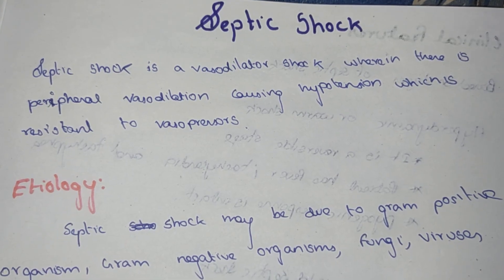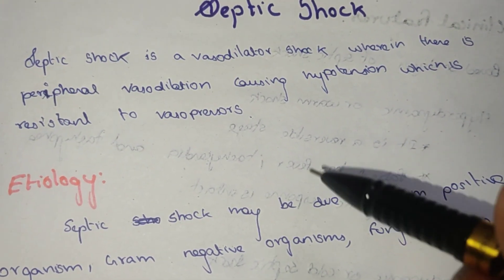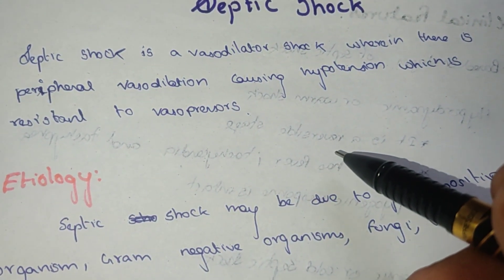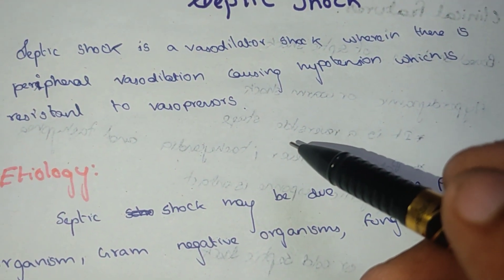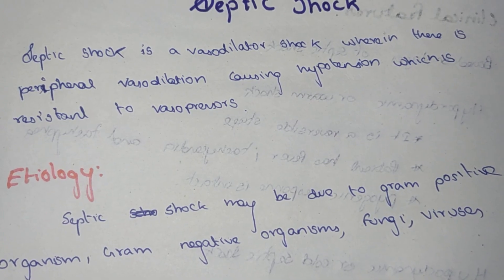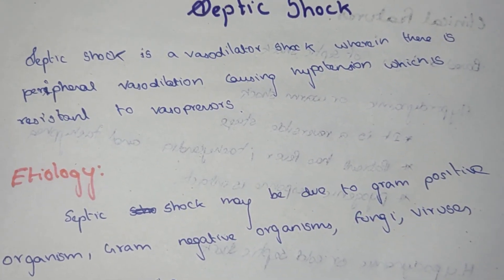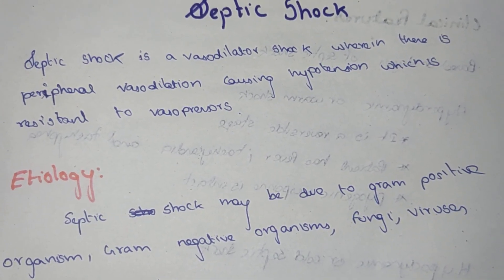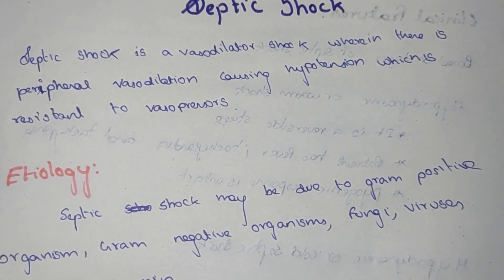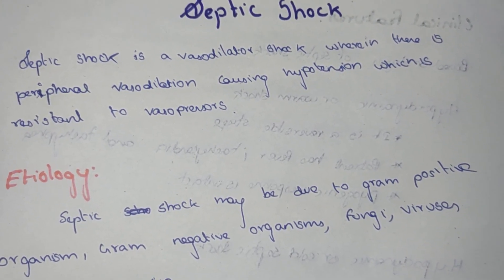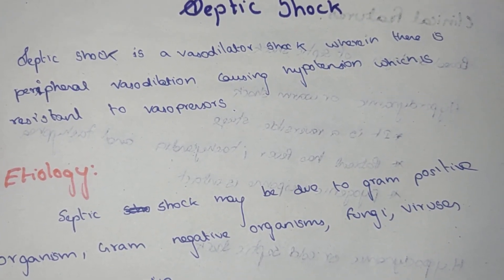Welcome to Manasuna Radio Channel. Septic shock is a vasodilatory shock wherein there is peripheral vasodilation causing hypotension. If you dilate the blood vessels, blood pressure — which is the lateral pressure on the blood vessels — decreases because blood flows more freely. This hypotension is resistant to vasopressors.